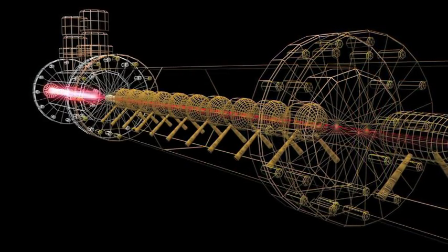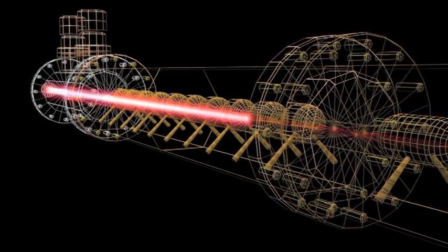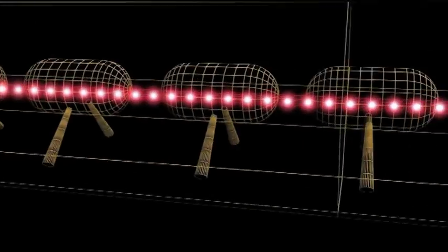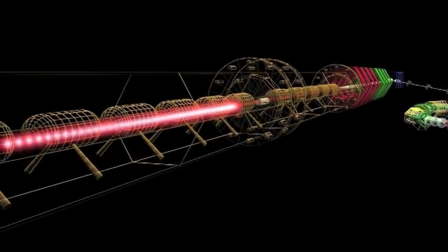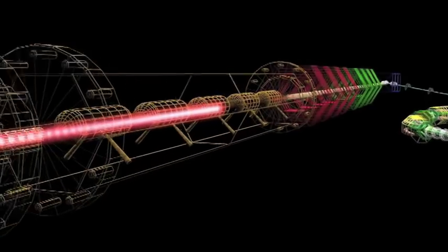The accelerator starts with the ISIS ion source, which creates negatively charged hydrogen ions made up of two electrons and one proton. These are then fed into the first of three accelerators.